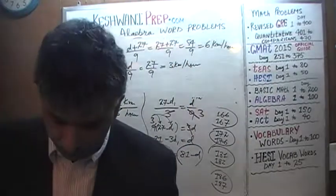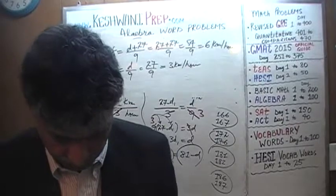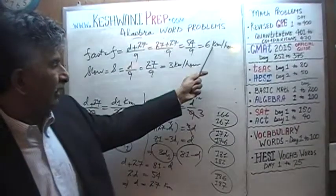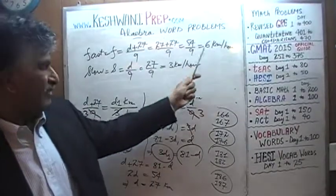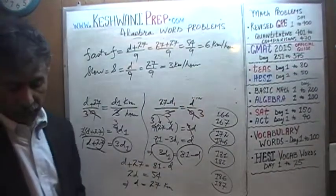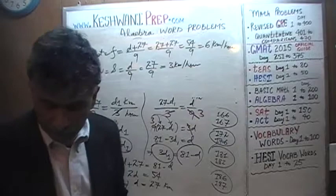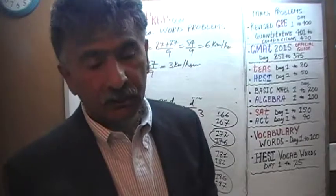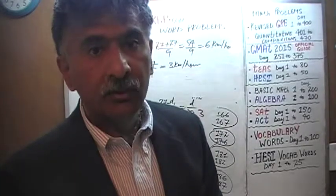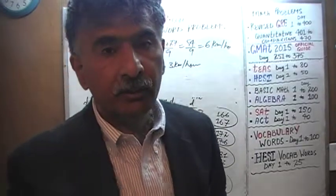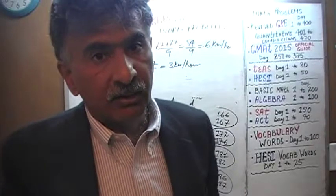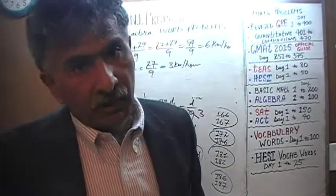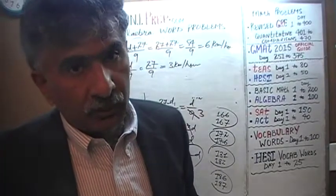The question was: what are their speeds? We just found them. The fast guy is going twice as fast as the slow guy. We are done as far as the problem is concerned. The last thing we're going to do is take a few extra seconds, as we always do, to verify our work and make sure it is correct.